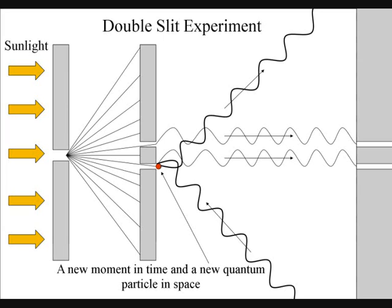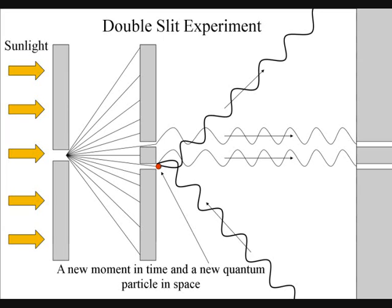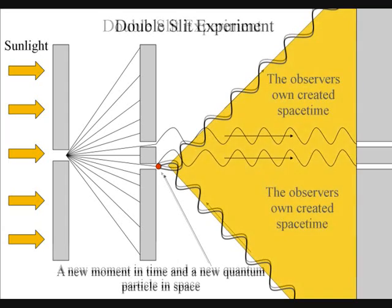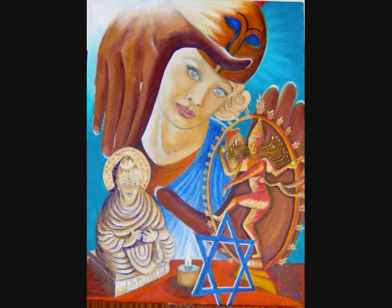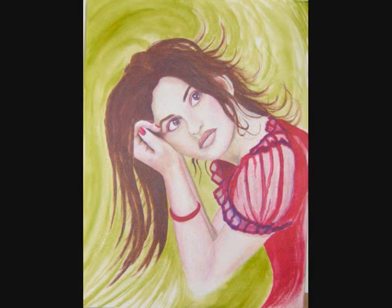Just like in Newton's first law of motion, the interference pattern will continue to maintain its state unless acted upon by an external force. The only problem is the external force can only see one moment of infinity.